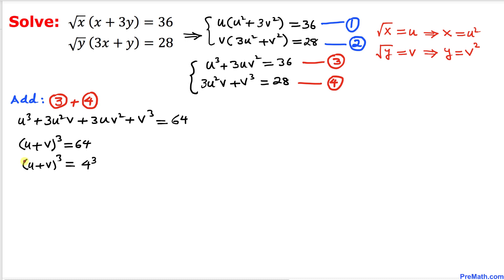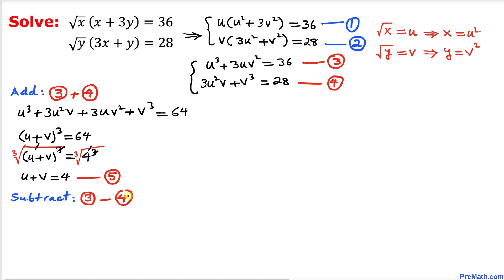Now 64 can be written as 4 cubed. Let's take the cube root on both sides to undo the cubes — the cube and cube root cancel on both sides — so we get u plus v equal to 4. Let's call this equation number 5.